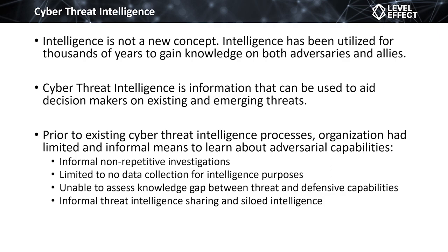Prior to cyber threat intelligence, organizations did have information on threats, but it wasn't formalized — there weren't processes, dissemination methods, or sharing frameworks. A lot of information was siloed, and corporate knowledge was tied up in very specific industries. Organizations with money or capability knew a lot; generally everybody else knew little to nothing. Most information was gathered through non-repetitive engagements: we were breached, we did an investigation, we learned something, we used that to improve things — but that's really where it stopped. We didn't try to source and correlate that to other new information and build a more mature intelligence process.